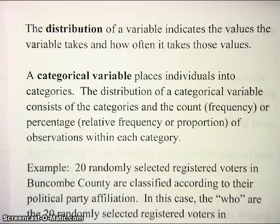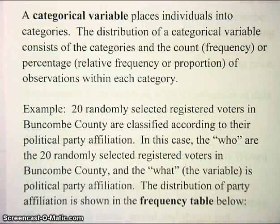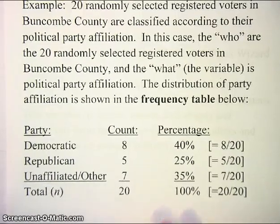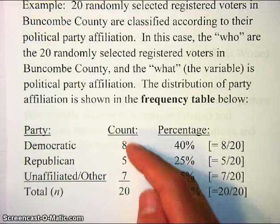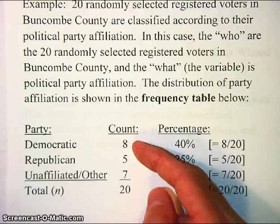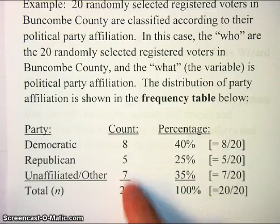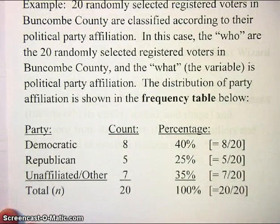For example, suppose we have 20 randomly selected registered voters in Buncombe County and we classify them according to their political party affiliation. The 'who' are these 20 randomly selected registered voters, and the 'what,' the variable, is political party affiliation. We can organize the distribution of our data in a frequency table. Here we have the three values: Democratic, Republican, or unaffiliated/other. We have eight registered Democratic, five registered Republican, and seven registered as unaffiliated or other. Dividing each count by the total of 20 gives the percentages shown in the column. This is what we call a frequency table.